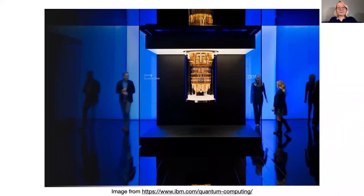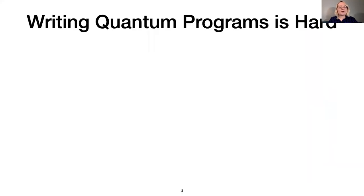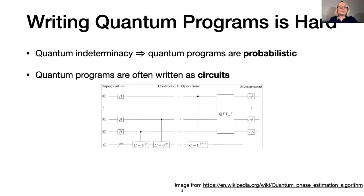Quantum computing is becoming a reality, with a range of commercial quantum computers available for public use. Here's a picture of one of IBM's early prototypes. Programming quantum computers promises to be very different from programming classical computers. For starters, quantum programs are inherently probabilistic. Quantum algorithms are designed to output a useful answer with high probability, but may sometimes produce an undesired result.